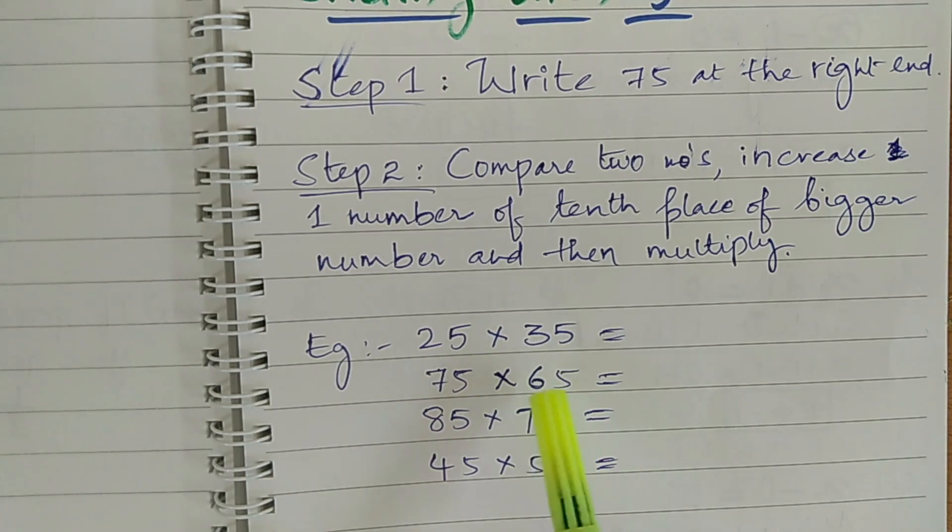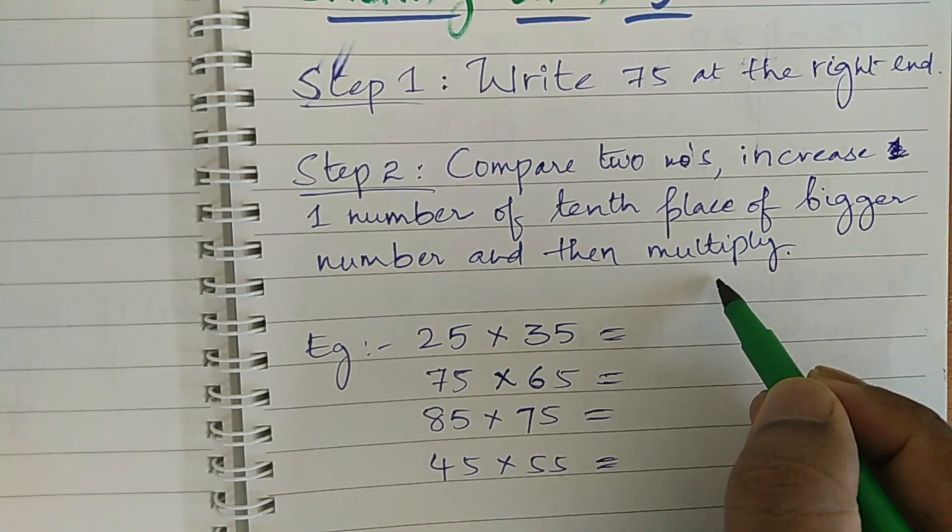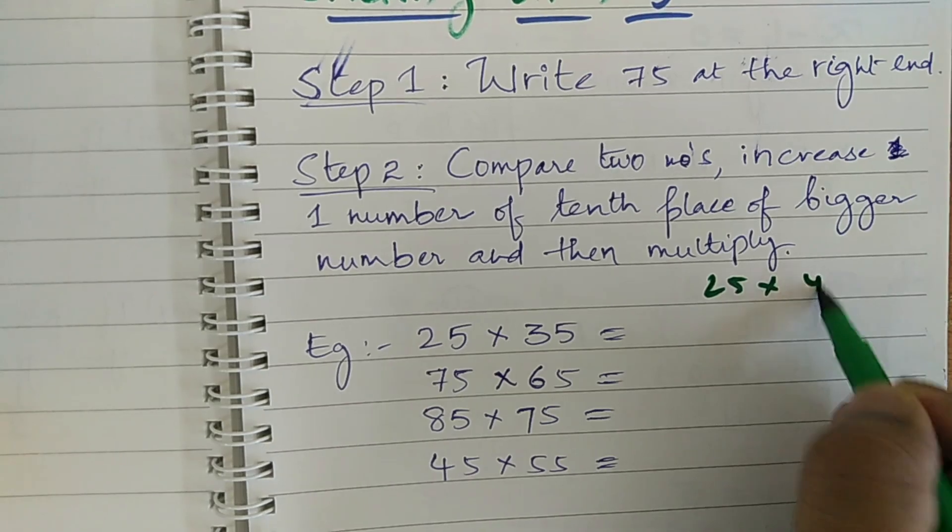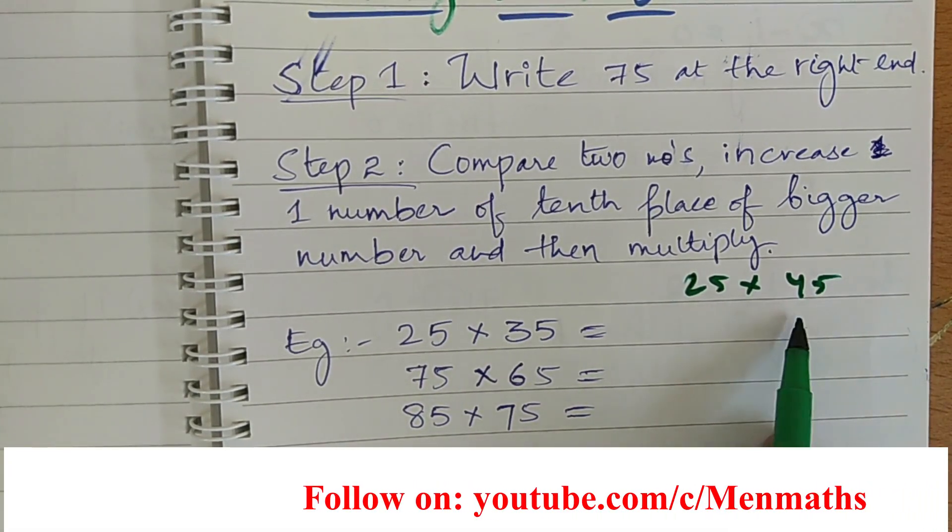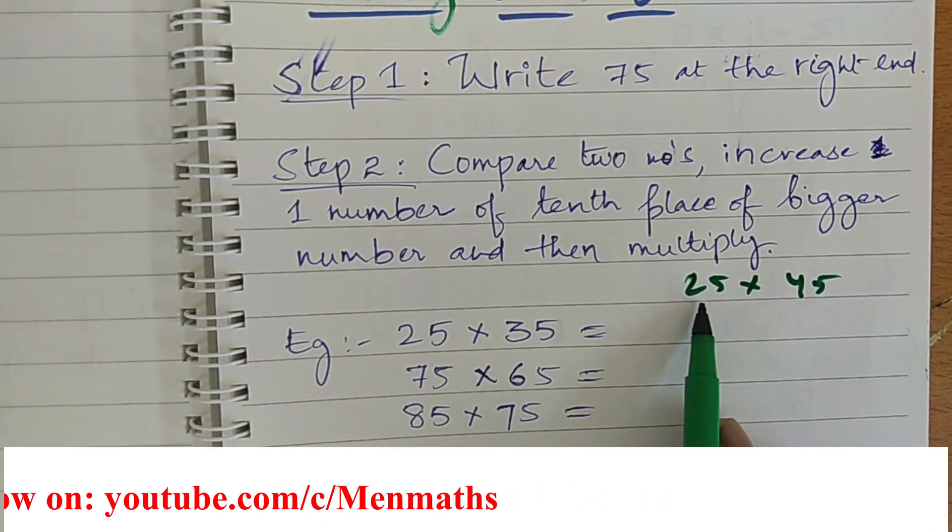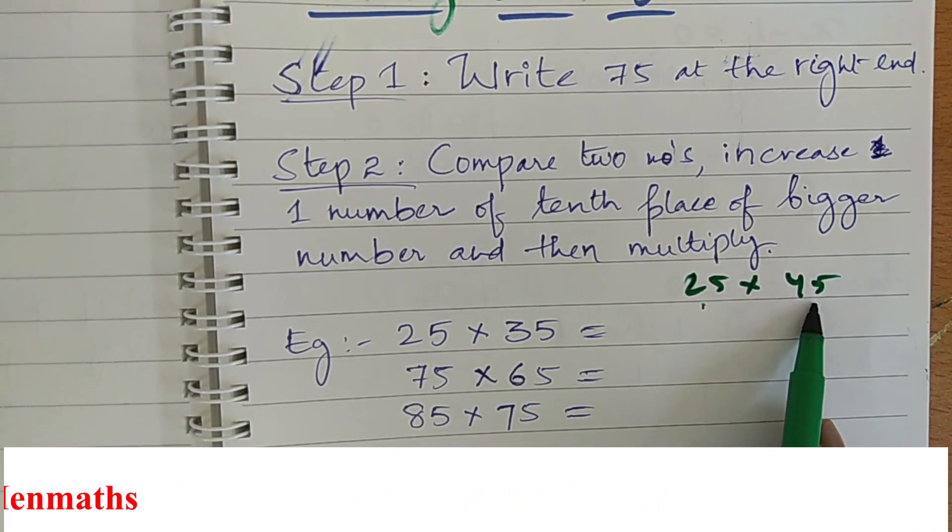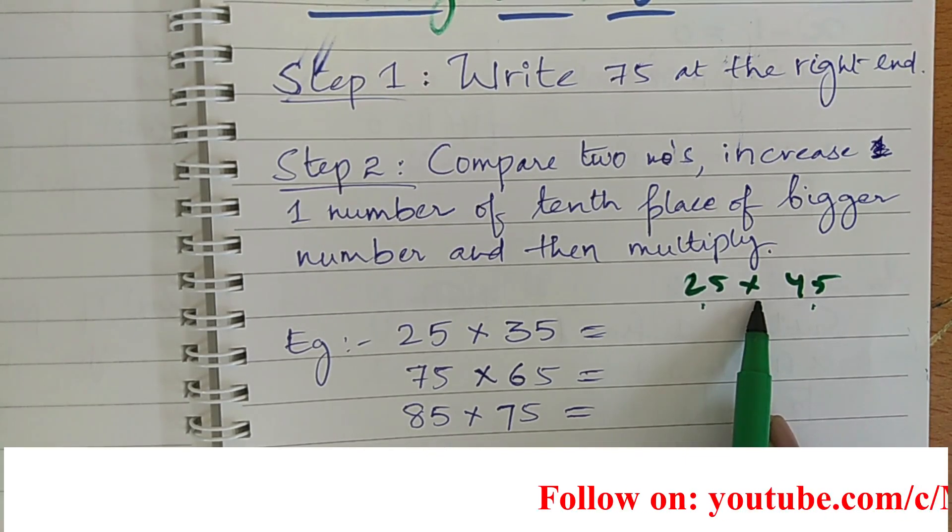So, for like this bases, this trick is used. Let us see here, 25 into 45. So, this trick is not applicable here. This trick is not used for this type of numbers. Because, the base is here 20, the base is here 40. So, in middle of this, the base 30 is missing.